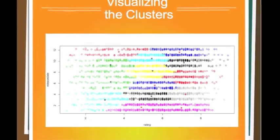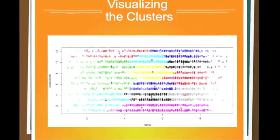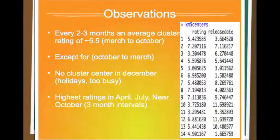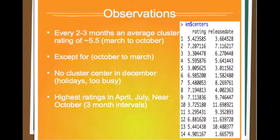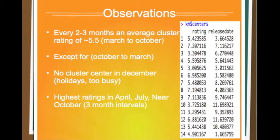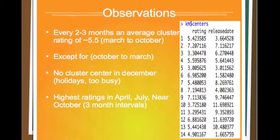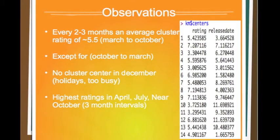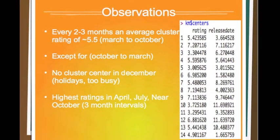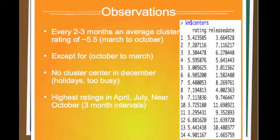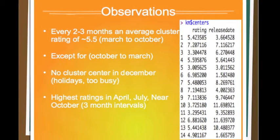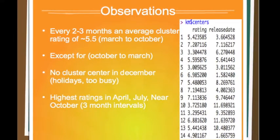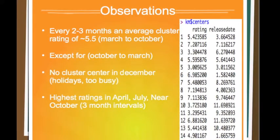Here's a simple visualization of the clusters. We can see the centers again. After looking at the data, you can see that about every 2 to 3 months there's an average cluster rating of about 5.5, which is around the average rating of a movie. This could be a family that only goes to the movies once in a while, or a short animation movie coming out every 2 to 3 months for children.